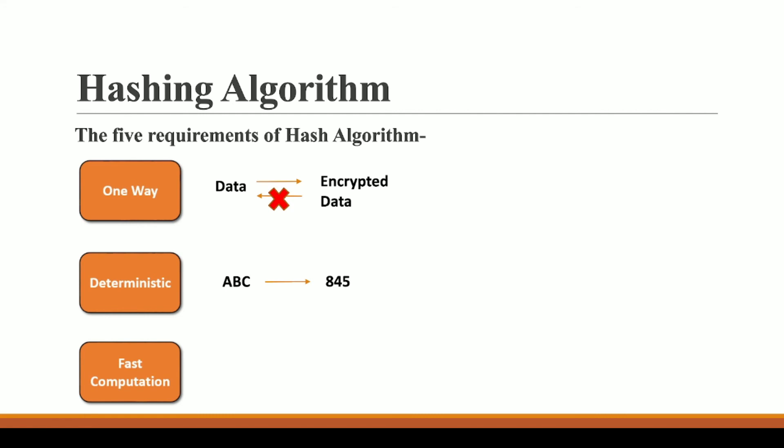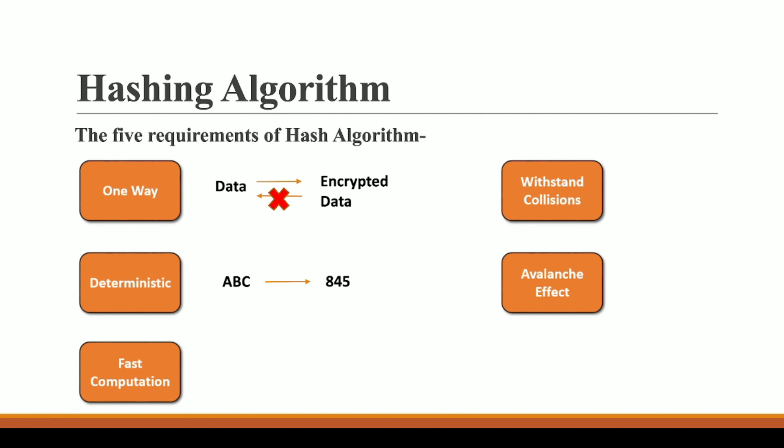Third, it should be fast — otherwise generating hashes would become a time-consuming process. Fourth, it should withstand collisions: it should be exponentially difficult to have two different inputs produce the same hash. The probability of two different inputs producing the same hash should be extremely low — it should essentially never happen.